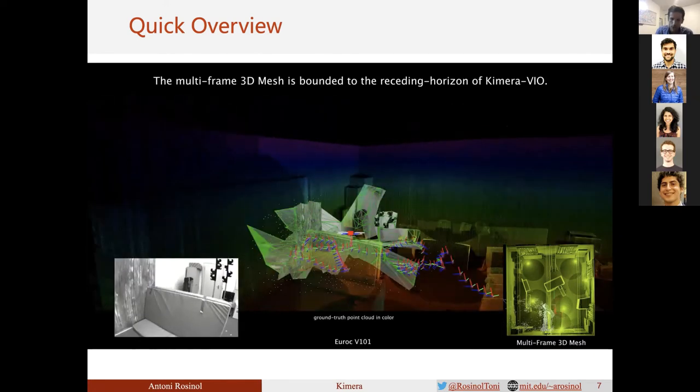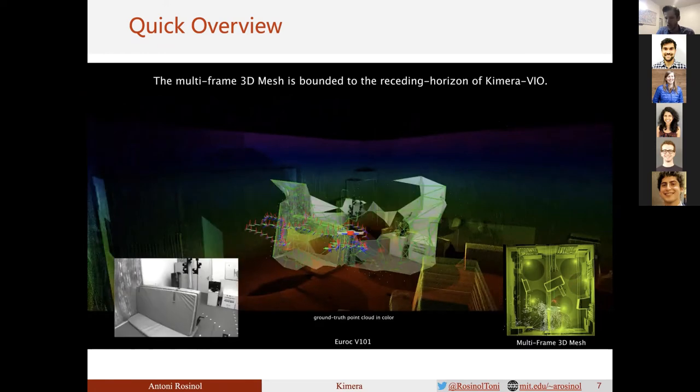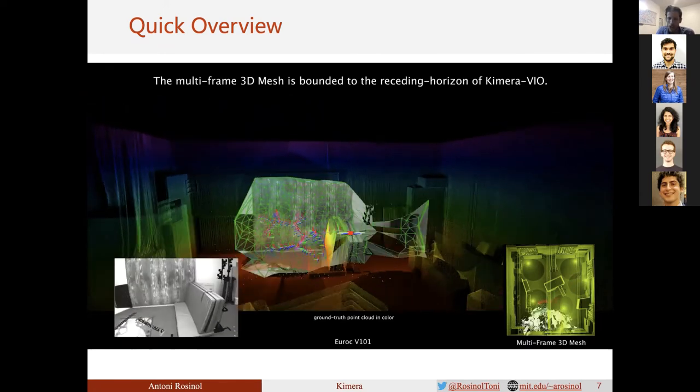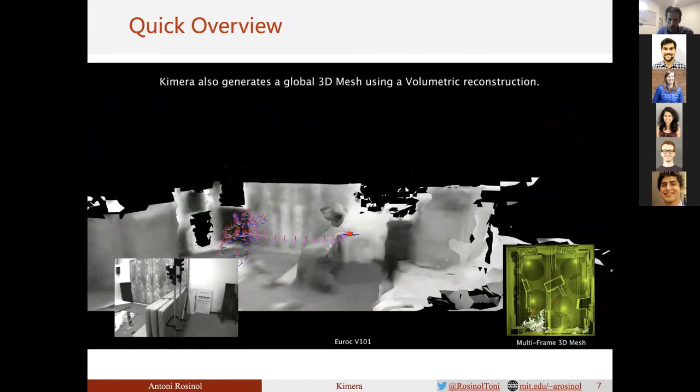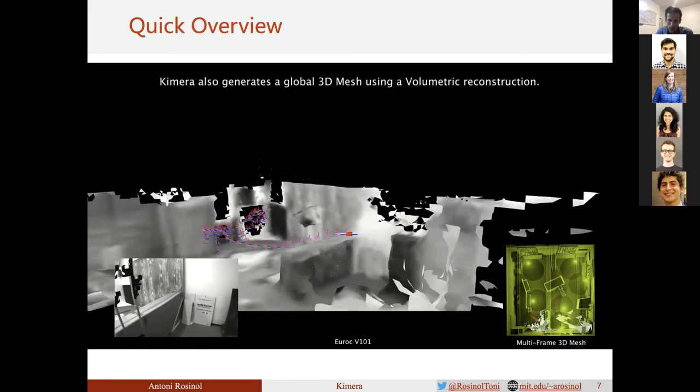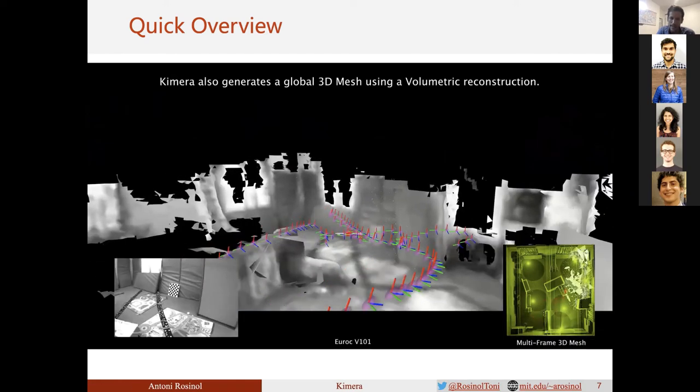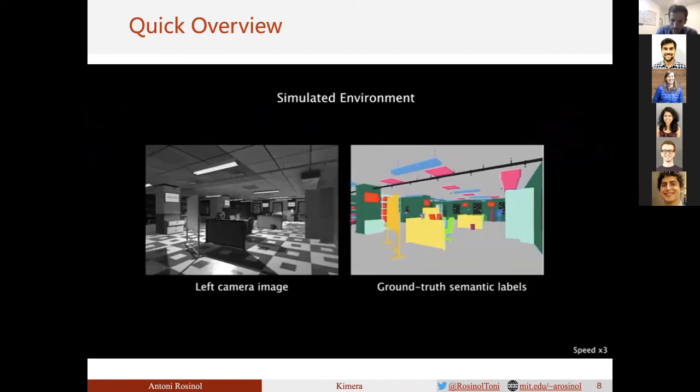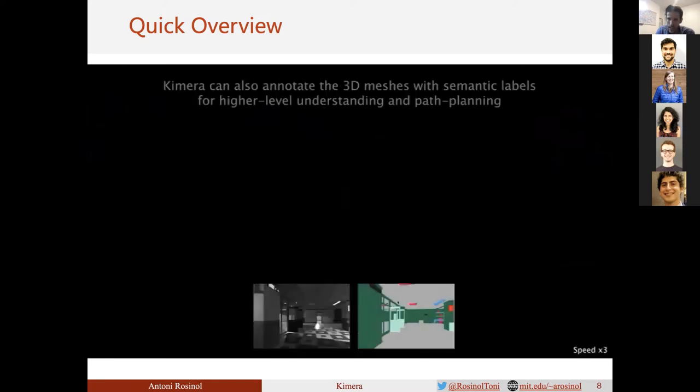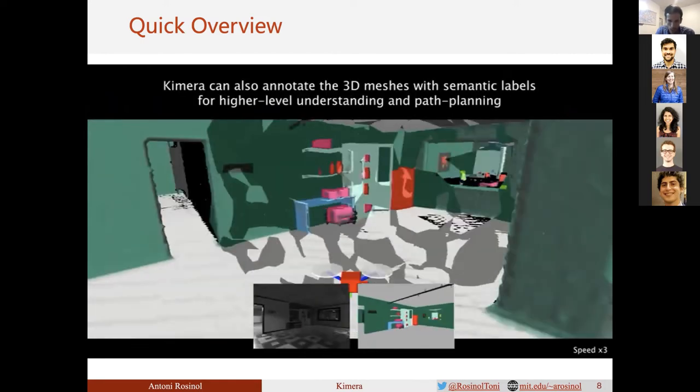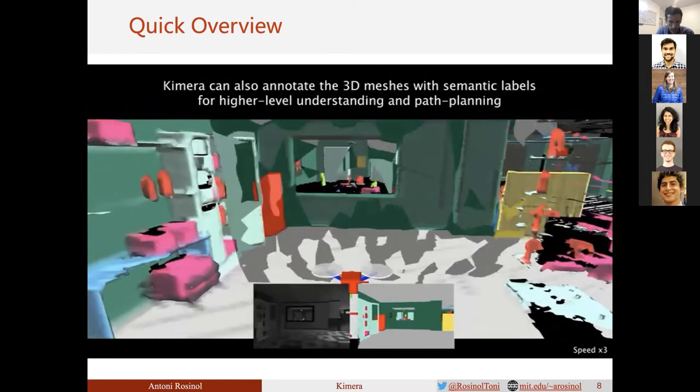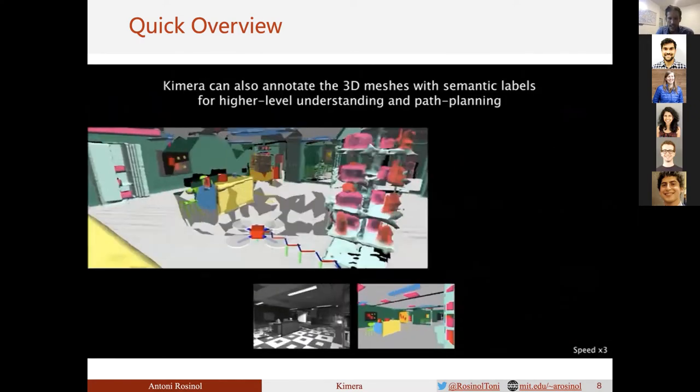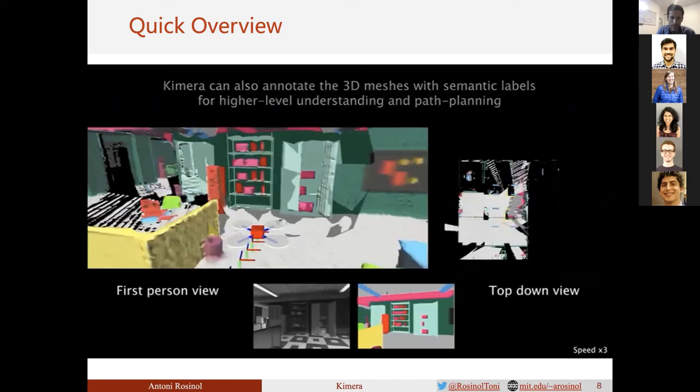The per-frame and multi-frame 3D meshes are useful for fast obstacle avoidance, but they're approximate. Therefore, we also use a volumetric approach to build a dense 3D mesh reconstructing the full scene, as you can see now. This computation is slower but still works in real-time at 10 frames per second. Finally, by using semantic segmentation of the 2D images the drone is seeing, visible on the right, and the global 3D mesh, we fuse semantic information from 2D to 3D. On the right, you can see a top-down view of the 3D metric semantic reconstruction.